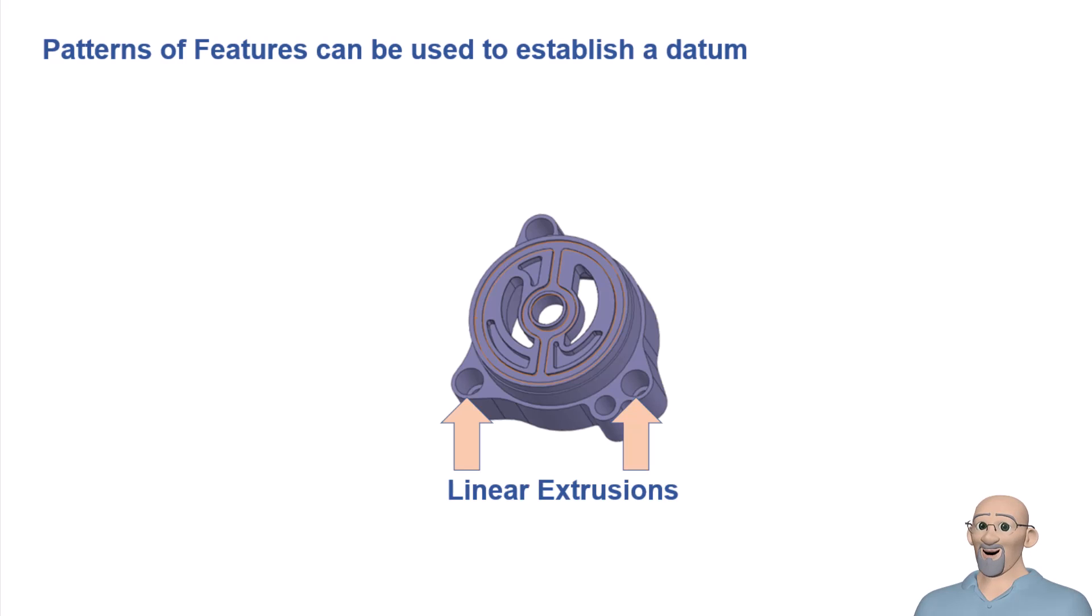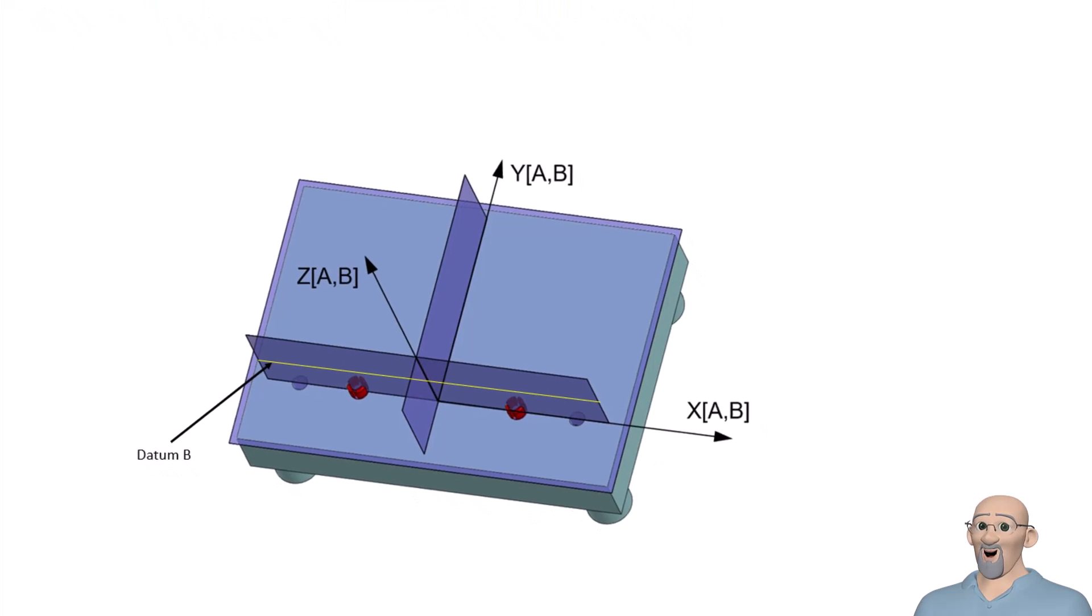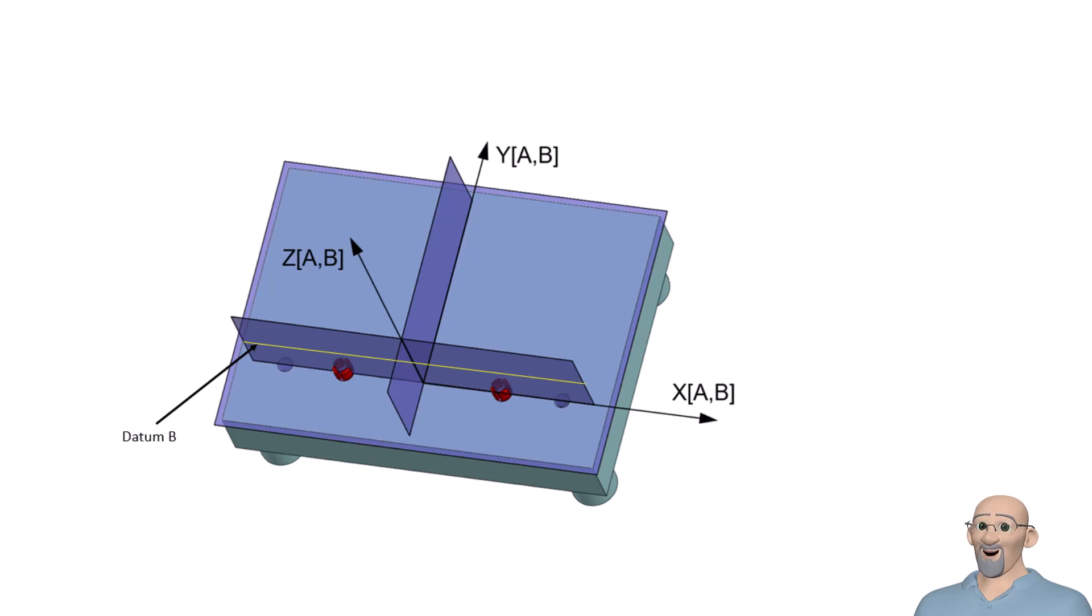The category or type of datum feature a pattern of two parallel holes falls into is a linear extrusion. The standard explains that if a primary datum feature is a linear extrusion, the datum would be a line on a plane. The same is true if two parallel holes are used as a secondary datum feature, but the plane and line will be constrained by the primary datum.